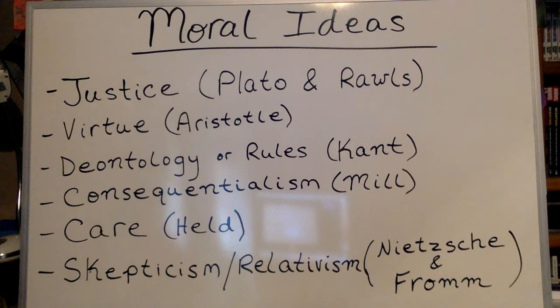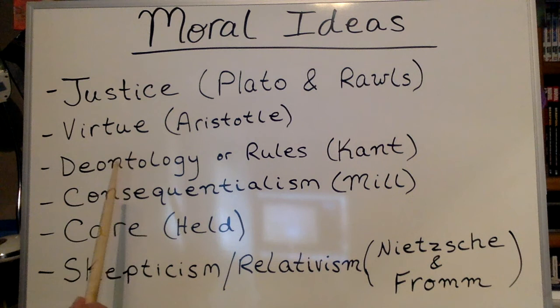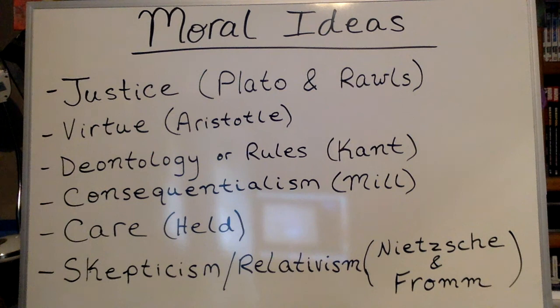Next, we're going to look at virtue theory from Aristotle. While everybody has heard of virtue before, Aristotle has a very specific way of thinking about it in terms of balance and vices. Next up, we're going to be looking at Immanuel Kant and what is known as his deontology. A deontological moral system depends on following rules. Creating and following fair and moral rules is what makes something moral, according to Kant, and he'll argue about why that is the case much more fully.